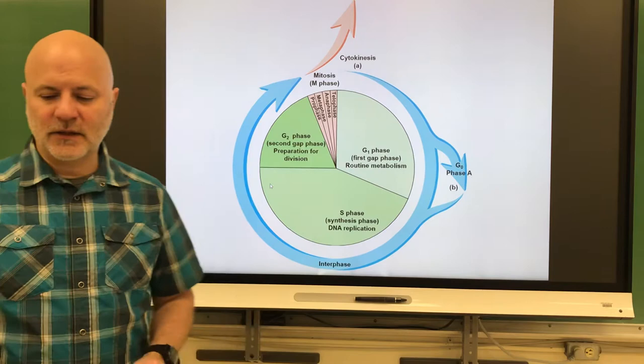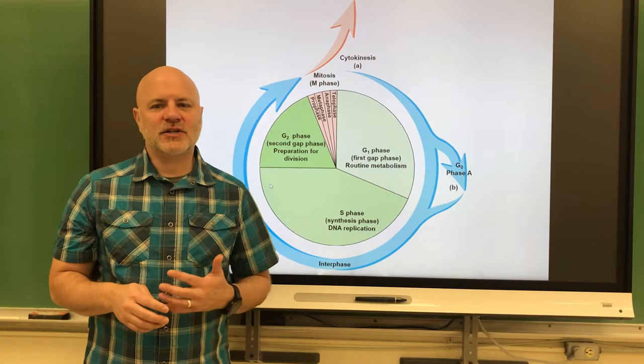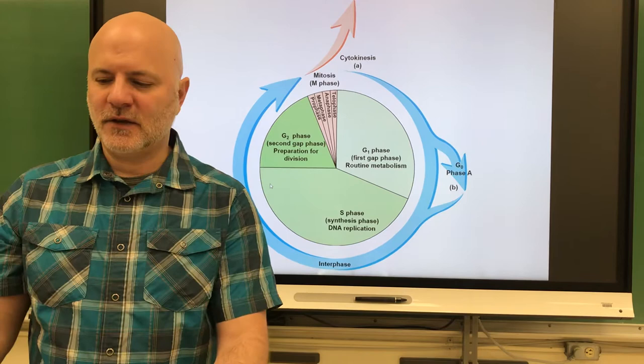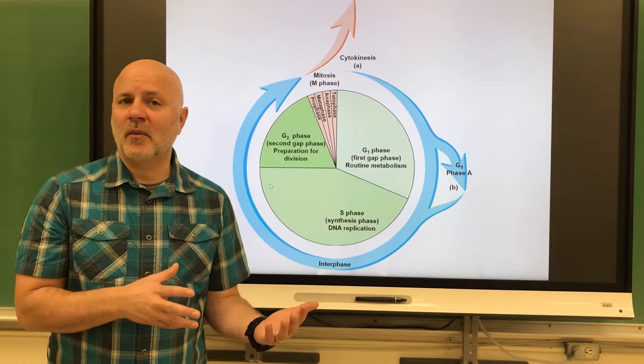Now let's look at chromosomes. The diploid number, abbreviated 2N, is a cell condition in which there are two sets of chromosomes. You get one set from your mom and the other set from your dad. This is found in somatic cells, which are typical body cells. For humans, our diploid number is 46 chromosomes — 23 from our mom and 23 from our dad.